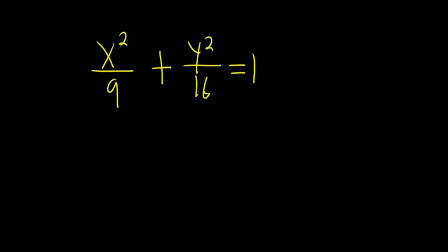We have to write this plane curve as a vector-valued function. Solution: remember that if you have cosine squared t plus sine squared t, that's equal to 1.